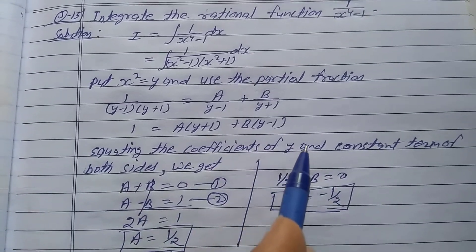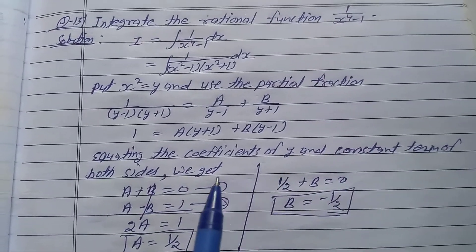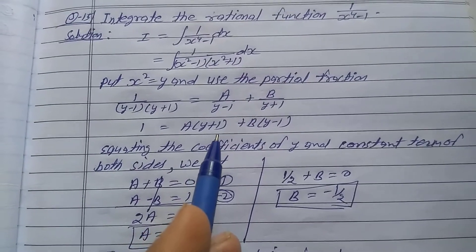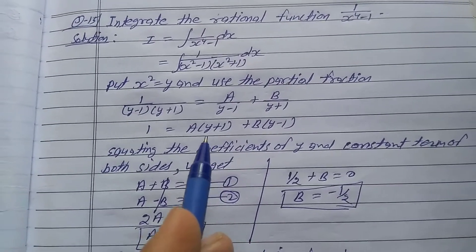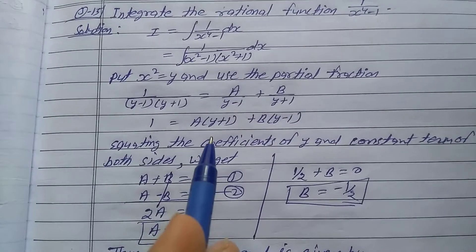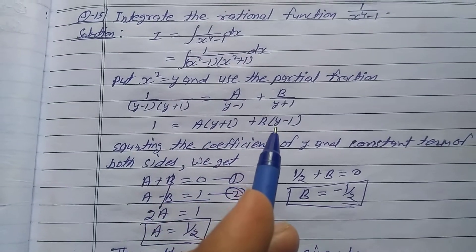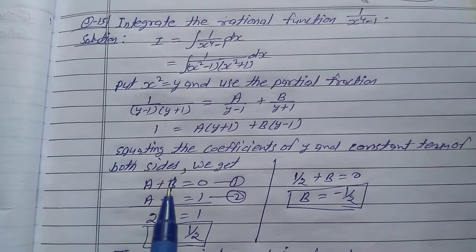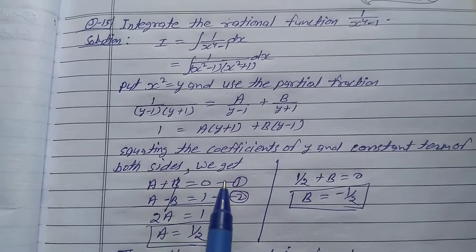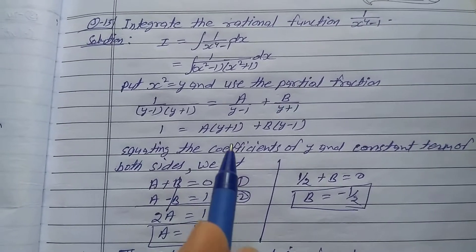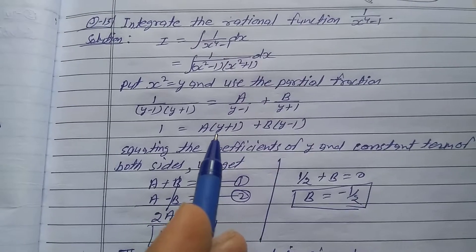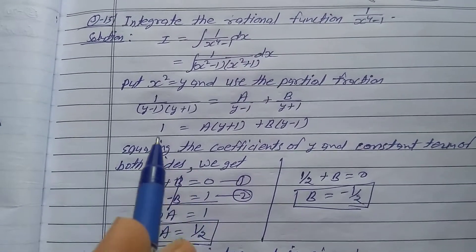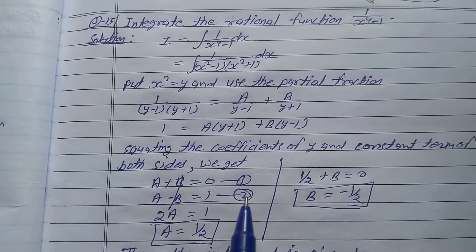Equating the coefficients of y and constant terms on both sides: for the y term, A plus B equals 0, since the left side has no y term — this is equation one. For the constant term, A minus B equals 1 — this is equation two.